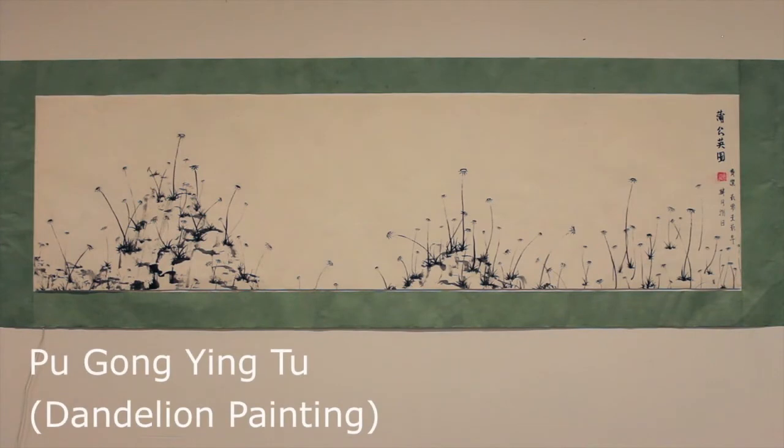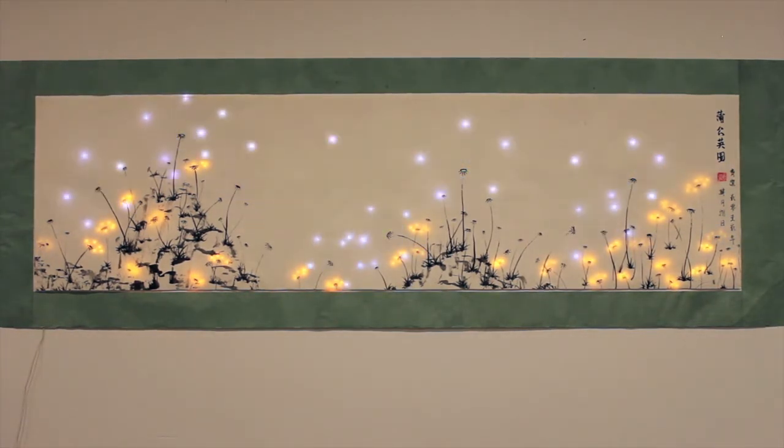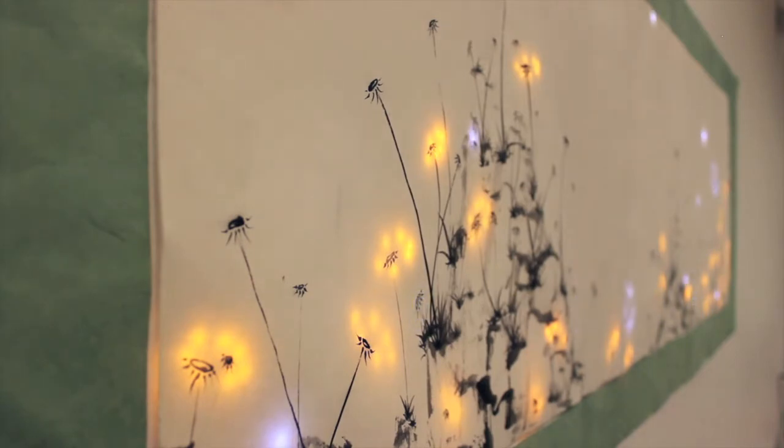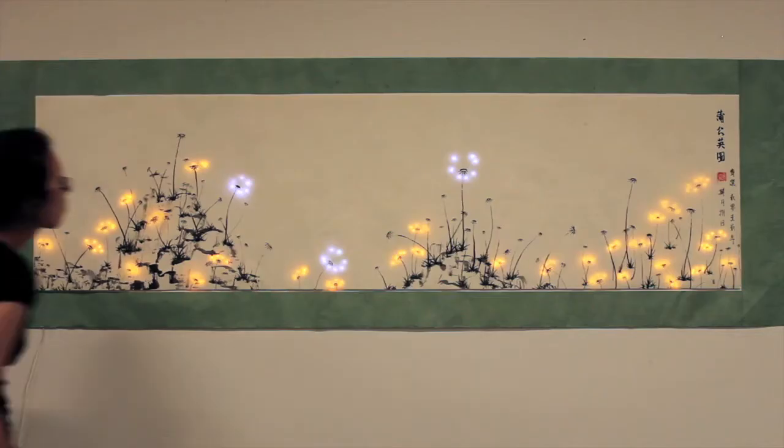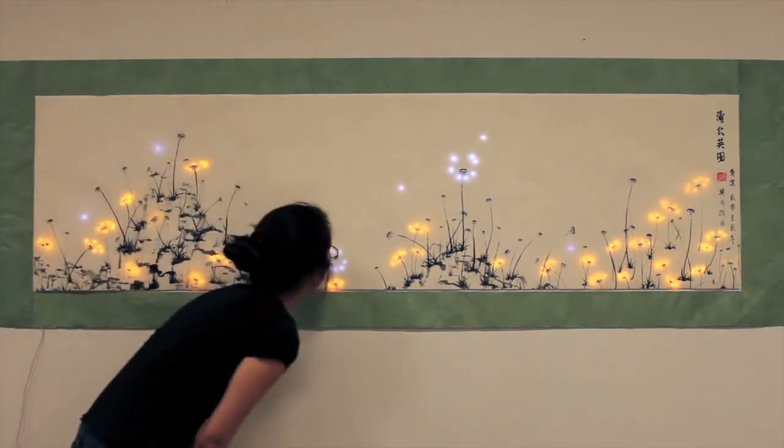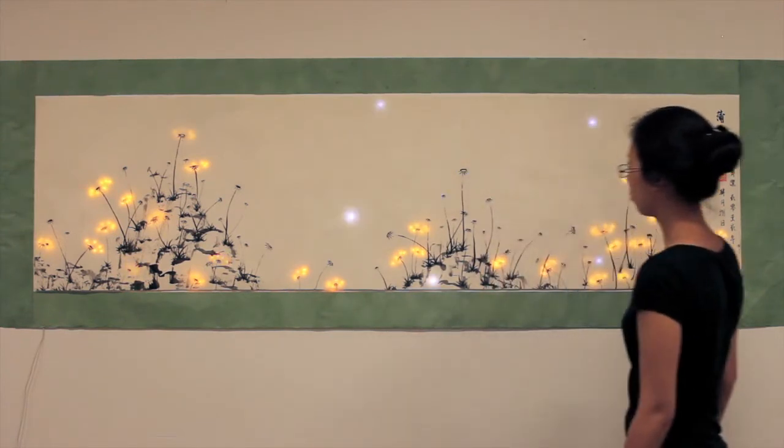This next project is an interactive dandelion painting. How it works is we have a traditional Chinese ink painting of a dandelion field, but the petals are actually made out of LEDs. So first the flowers start out with yellow petals, and then over time they turn into white puffs. These white puffs are interactive. You can blow on them just like you would a regular dandelion. When you blow on them, the seeds disperse and these start out new flowers, which then you can eventually blow on too.